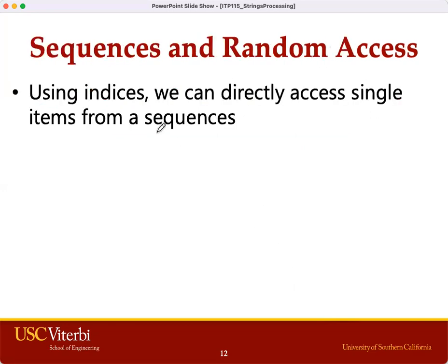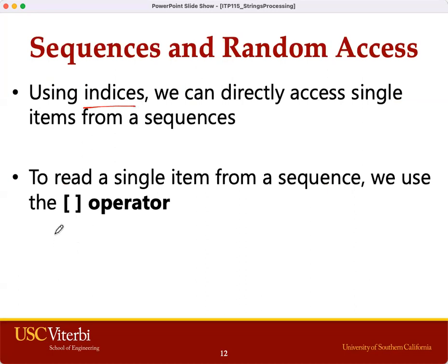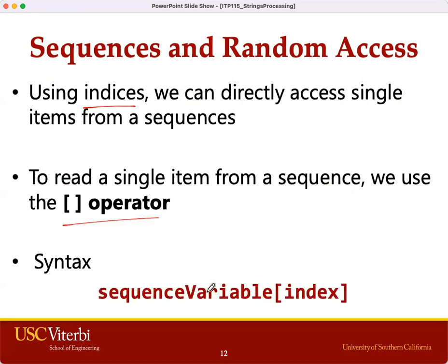Using indexes, we can access a single item from a string using the square bracket operator through the syntax: the variable name, square bracket, the value of the index. This is going to give us the item or character at that particular index of that string or sequence.